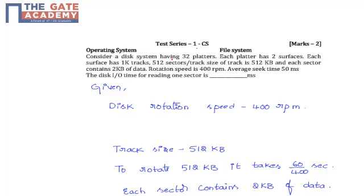Consider a disk system having 32 platters. Each platter has two surfaces. Each surface has 1K tracks, 512 sectors per track. Size of track is 512 KB and each sector contains 2 KB of data. Rotation speed is 400 RPM. Average seek time is 50 milliseconds. The disk input output for reading 1 sector is dash milliseconds.